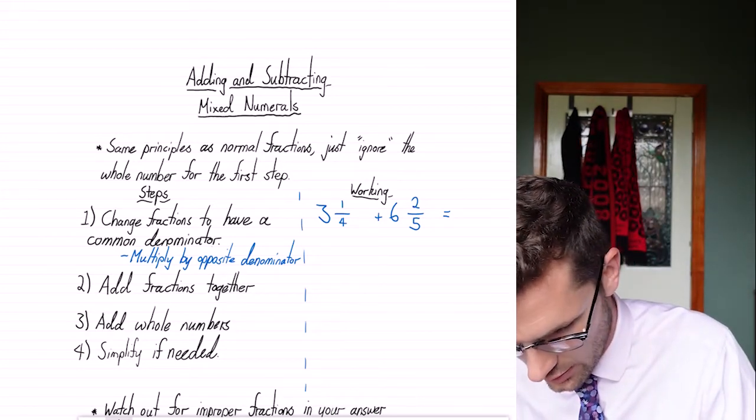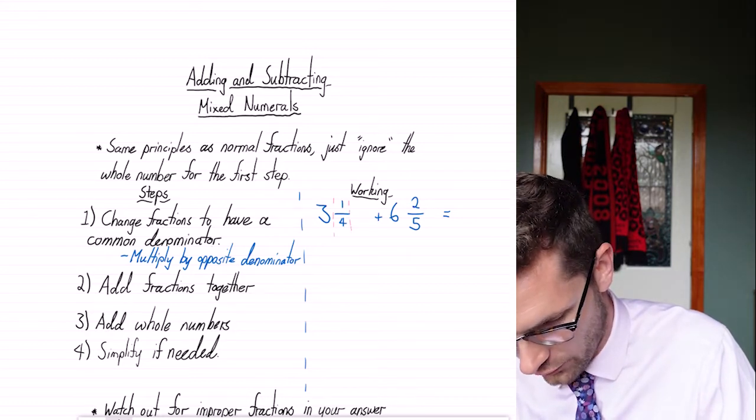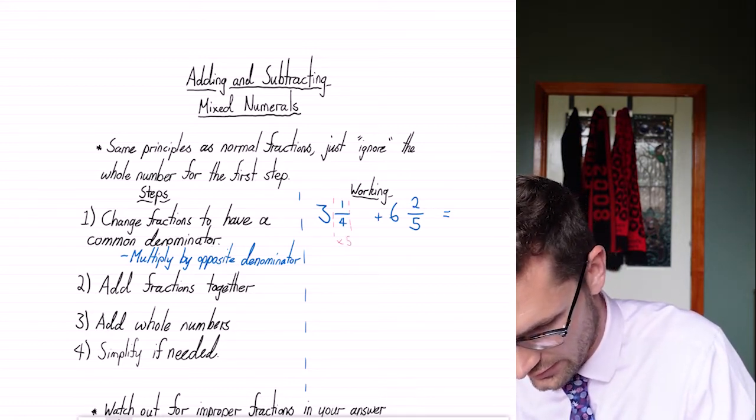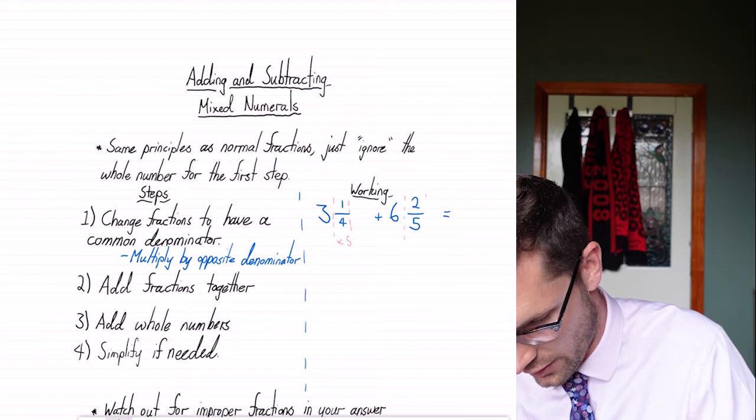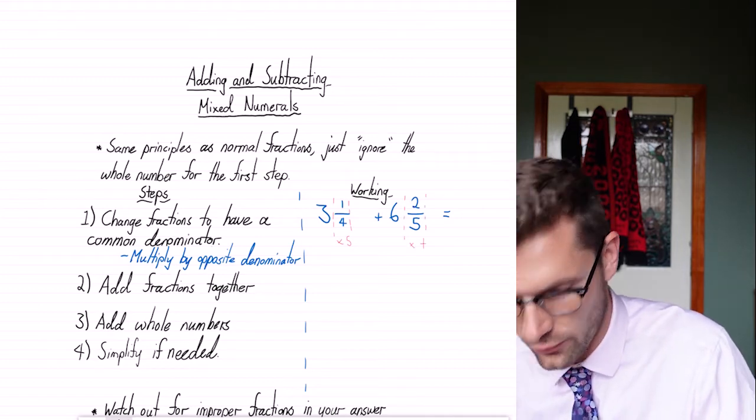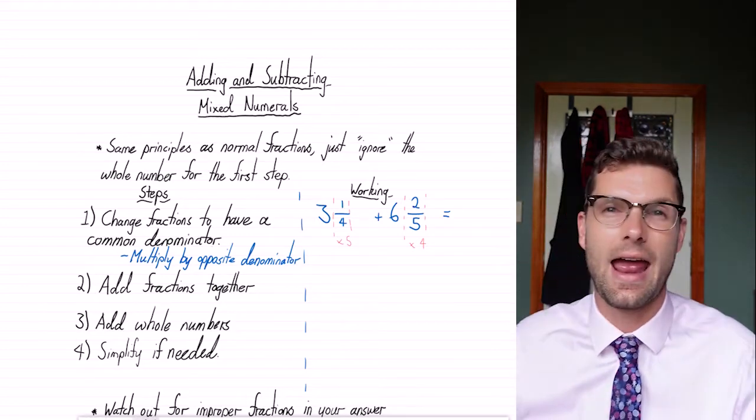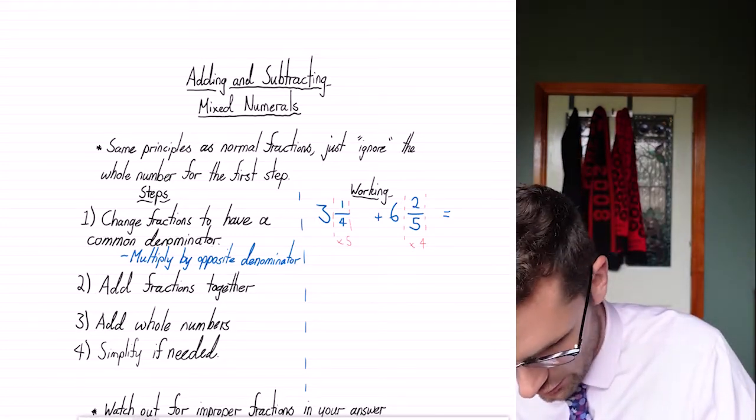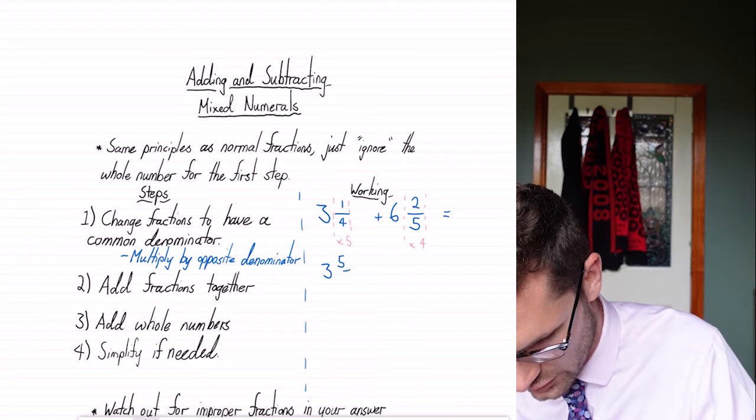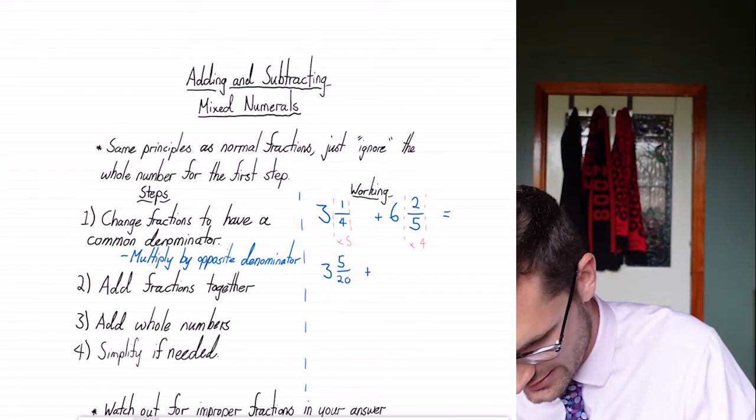So this quarter, I'm gonna times the whole fraction by five, and this two over five, I'm gonna multiply this whole fraction by four because it's the opposite denominator. Then I'm gonna rewrite out my fractions. So I've got three, five over 20, plus six, eight over 20.